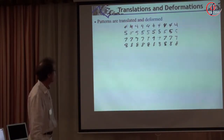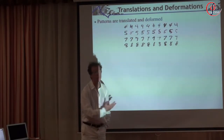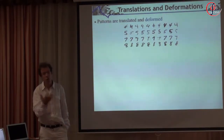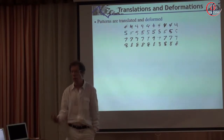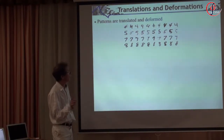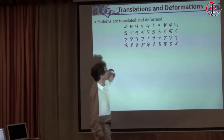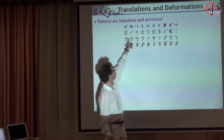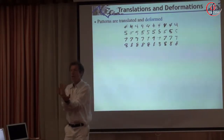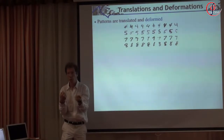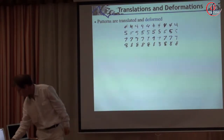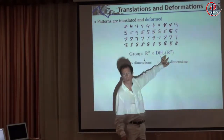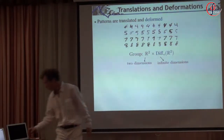The first major invariant you want to build when doing image or audio classification is invariance to translation. Invariance to translation is easy — there are millions of ways to build it. However, you want something more. If you look at the problem of digit recognition, the digit may move around, but you also want to be stable to deformations. You want a representation such that if there is a small deformation, the representation should be similar. So the group you are dealing with is not just a simple two-dimensional translation group, but the infinite-dimensional diffeomorphism group that you want to control.